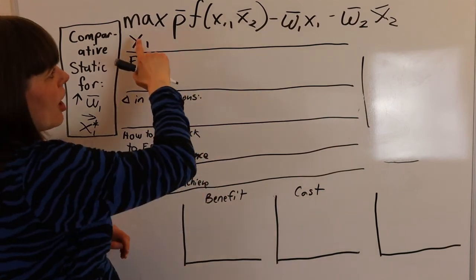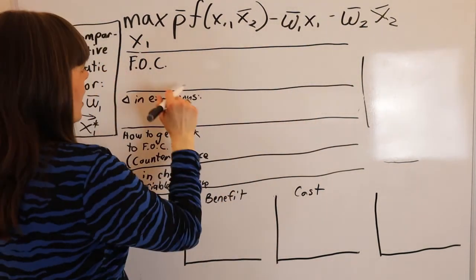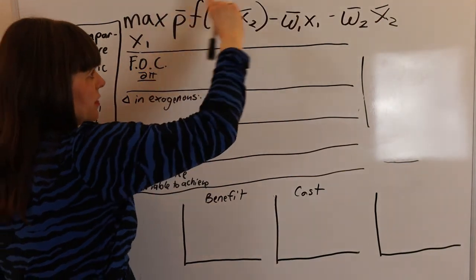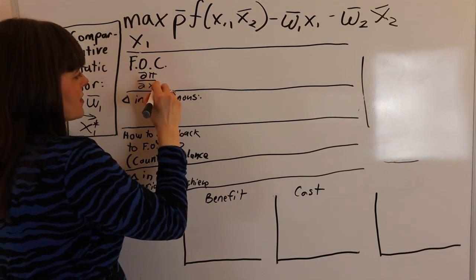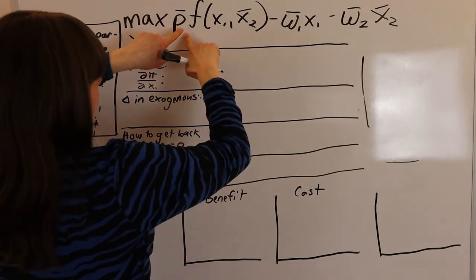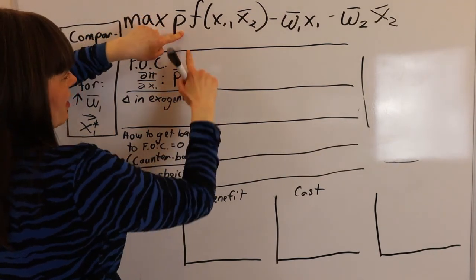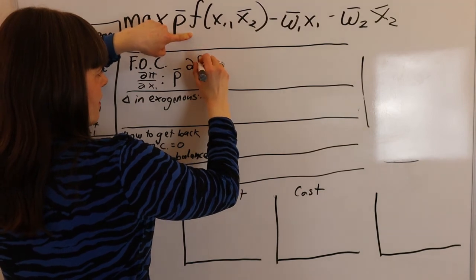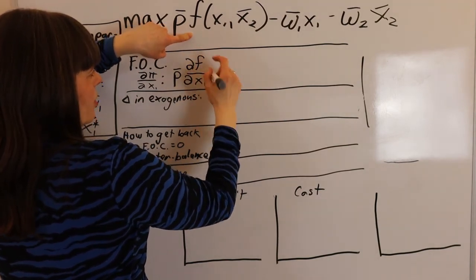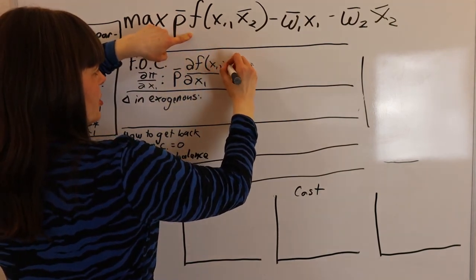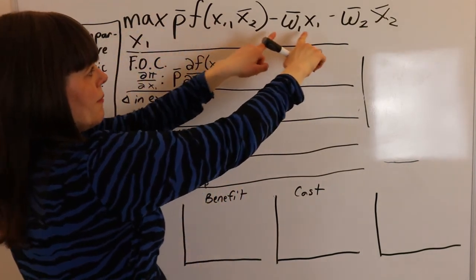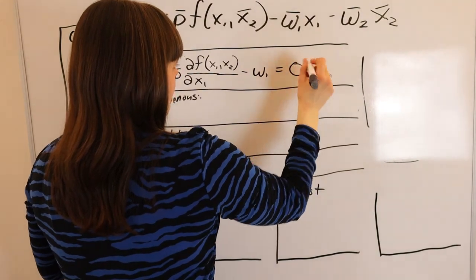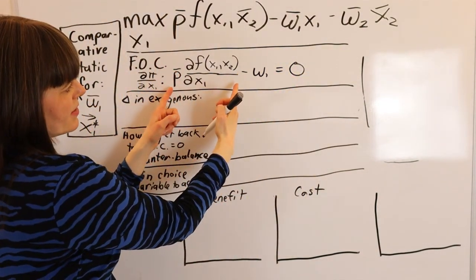The first step in doing this is we look at our optimization problem and take our first order condition. The first order condition is going to be the derivative of the payoff function with respect to our choice variable X1. To take that derivative, we see that P is exogenous so it behaves like a constant, and then we need to take the derivative of the production function with respect to X1 — reminding ourselves that the production function is a function of both X1 and X2. The derivative of the wage term is minus W1, and the other term's derivative is zero. We set our first order condition equal to zero — this is marginal benefit and marginal cost.